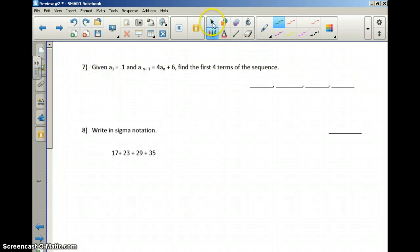Number 7 is another recursive pattern. They tell you your first term is 1/10. And again, the next term in the pattern is going to come from 4 times that 1/10 plus 6. That is going to generate a value of 6.4.